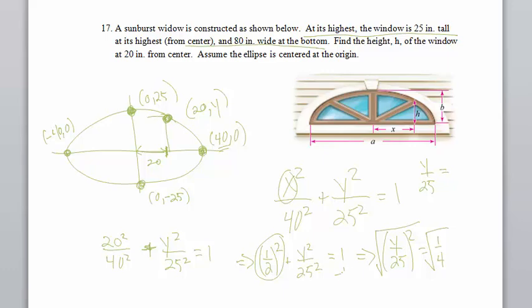Subtract 1 fourth from both sides. I should get 3 fourths, not 1 fourth. So I get y over 25 equals the square root of 3 fourths to the square root of 3 over 2. And then finally multiply both sides by 25, and I solve for y.